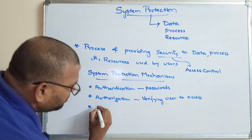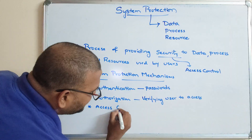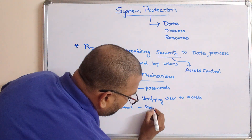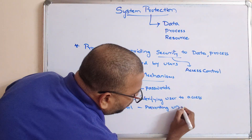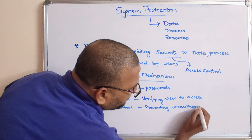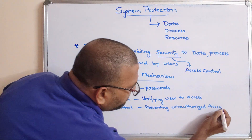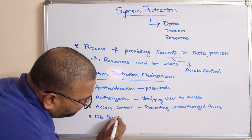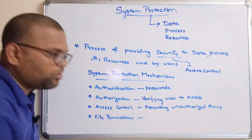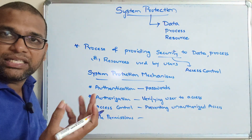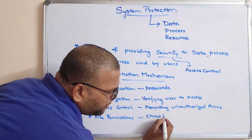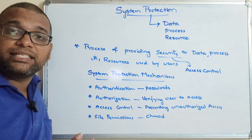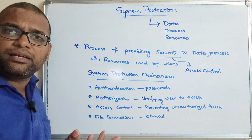One of the goals also tied to a mechanism is access control — preventing unauthorized access to the system. The next mechanism is file permissions. Coming to restrictions on data, file permissions are given. In Linux, for example, we have the chmod command, which gives permissions or privileges to users — defining who can access which files and restricting access to data.